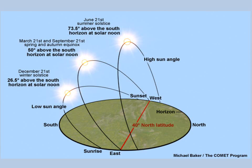On the shortest day of the year, December 21st in the Northern Hemisphere, the sun is very low in the sky, reaching only 26.5 degrees above the horizon at solar noon. At this low angle, the sun must travel through more of the Earth's atmosphere and is much less intense than in late June.